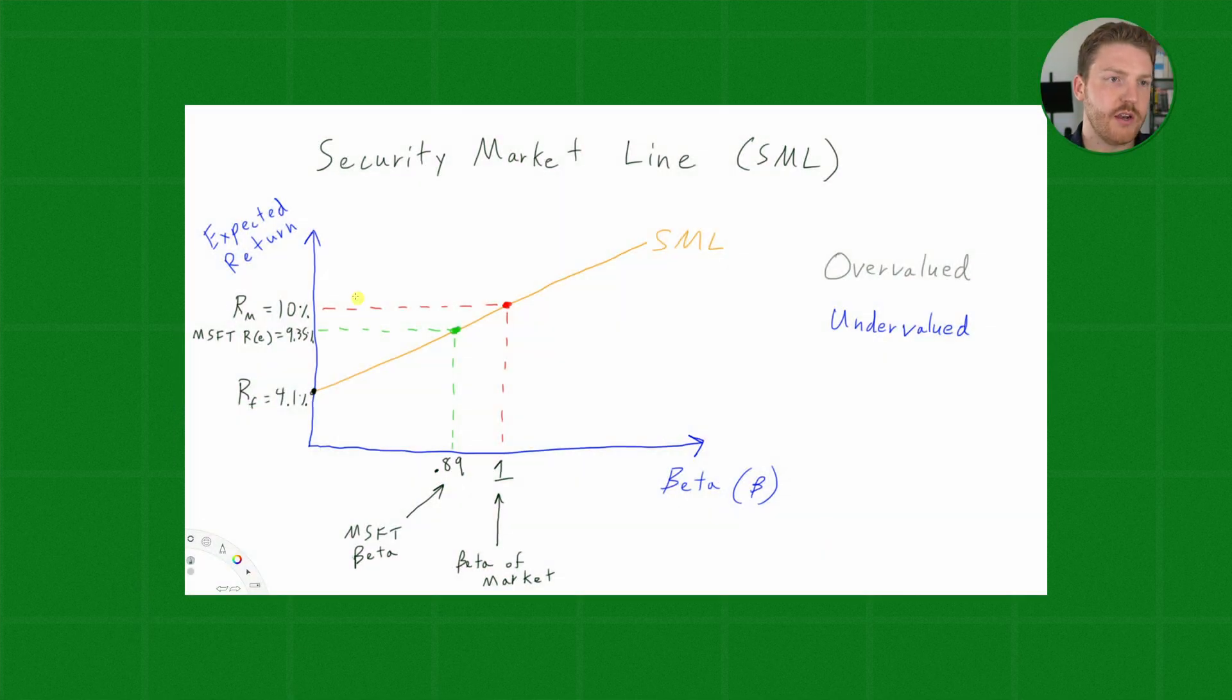So, the security market line is on a graph with the expected return as the vertical axis and beta as the horizontal axis. The security market line is this orange line, which intercepts with the expected return vertical axis at the risk-free rate, which in our example is 4.1%. And then, as we go to the right, beta increases and increases and increases.